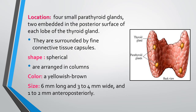In the anatomy of the parathyroid gland: four small parathyroid glands are embedded into the posterior surface of each lobe of the thyroid gland. They are surrounded by fine connective tissue capsules. Shape: spherical or oval, arranged in a column — two on each side, totaling four. Color: yellowish-brown. Size: 6 mm long, 3 to 4 mm wide, and 1 to 2 mm in the anteroposterior dimension.